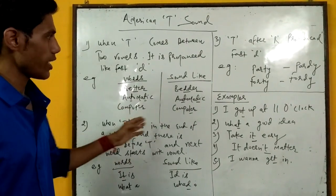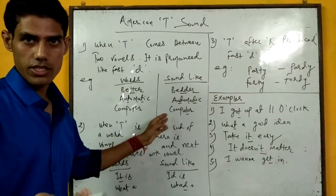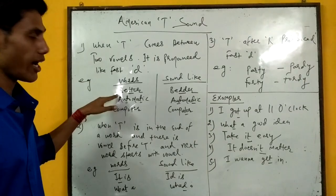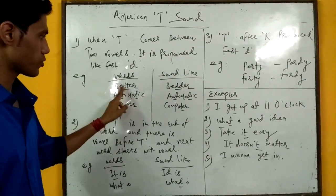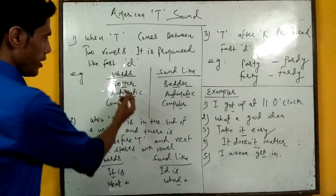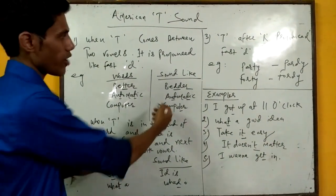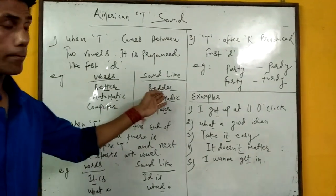We have some words and we are going to have how Americans sound. The word we have is better. And look at the American pronunciation. You can see that T is between two vowels here. And look at the sound of Americans. They pronounce it better.